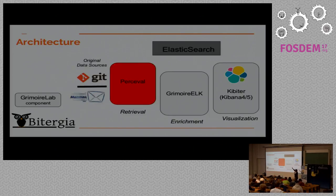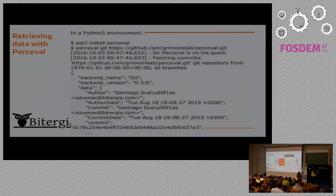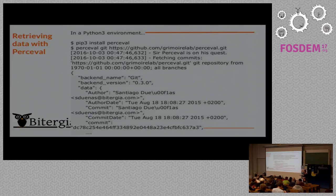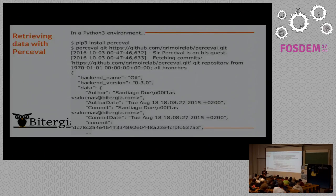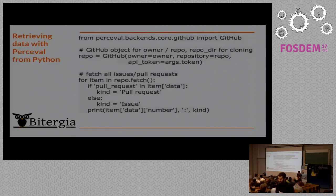Let's be practical. Perceval gets information from repositories and produces JSON files. It's quite simple — it's Python 3, so you install it with pip: `pip install perceval` and you have the latest version. Then you just run it. Perceval is both a Python module and a script. In this example, I run it with the Git backend on a URL — in this case the Git repository of Perceval itself. It clones the repository, runs git log with all sorts of options, and starts producing JSON documents with the repository information. You can do exactly that for about 20 different data sources.